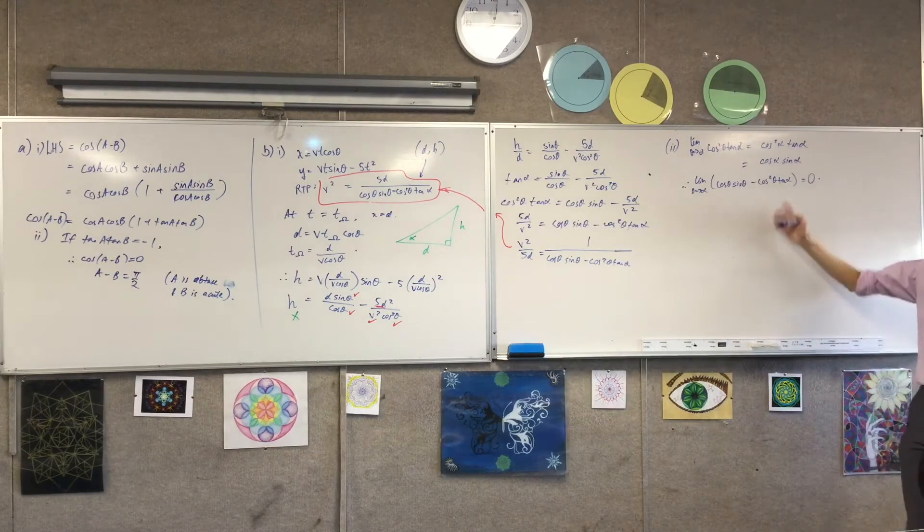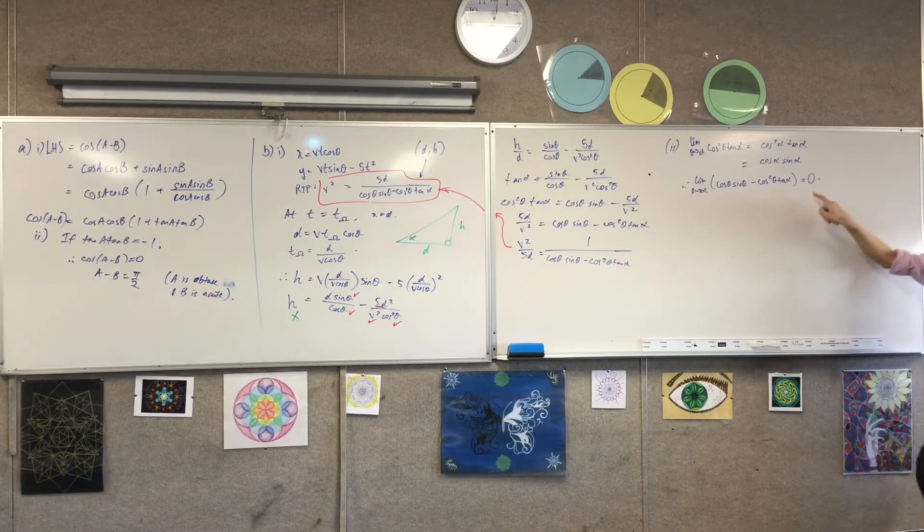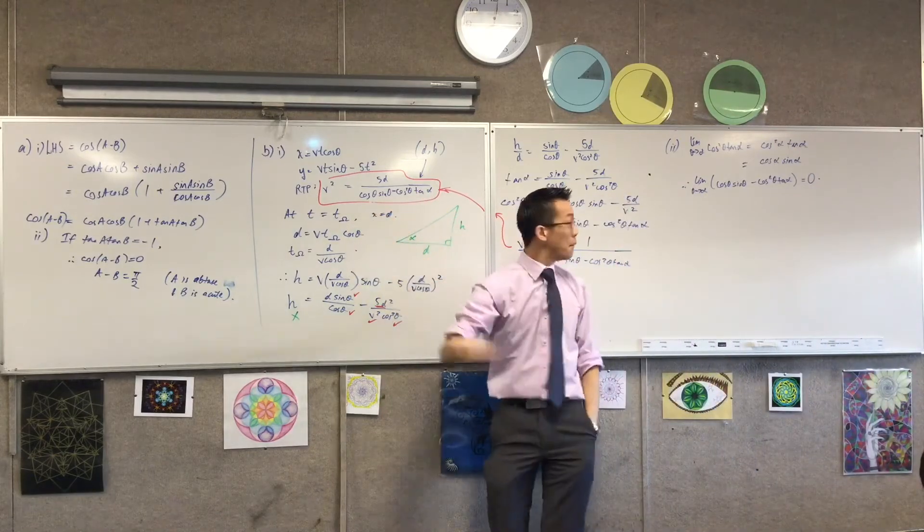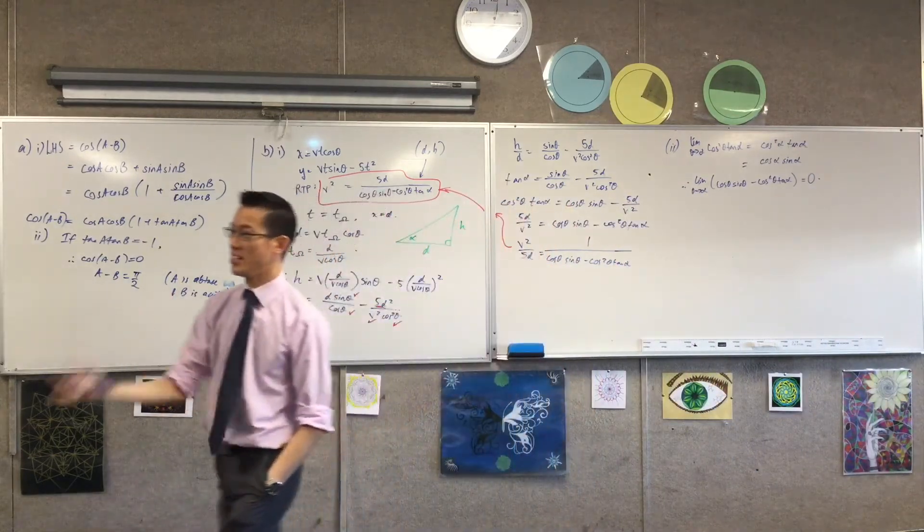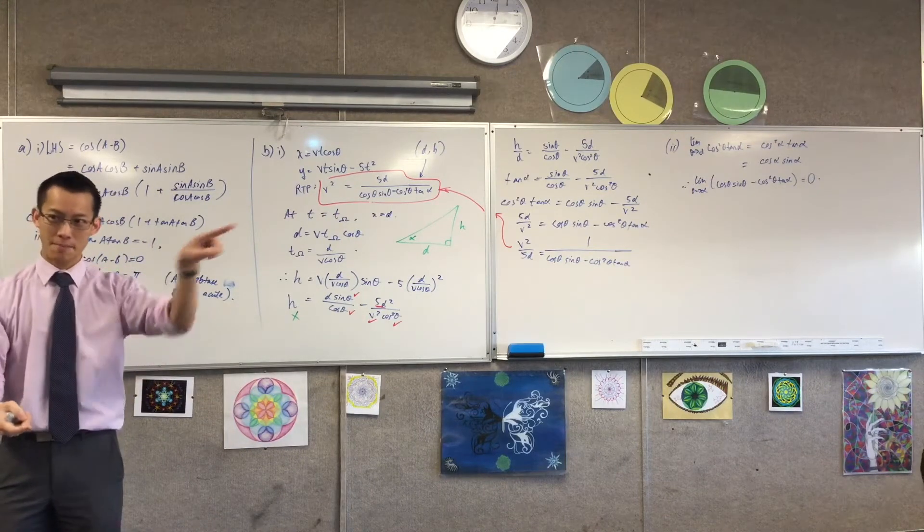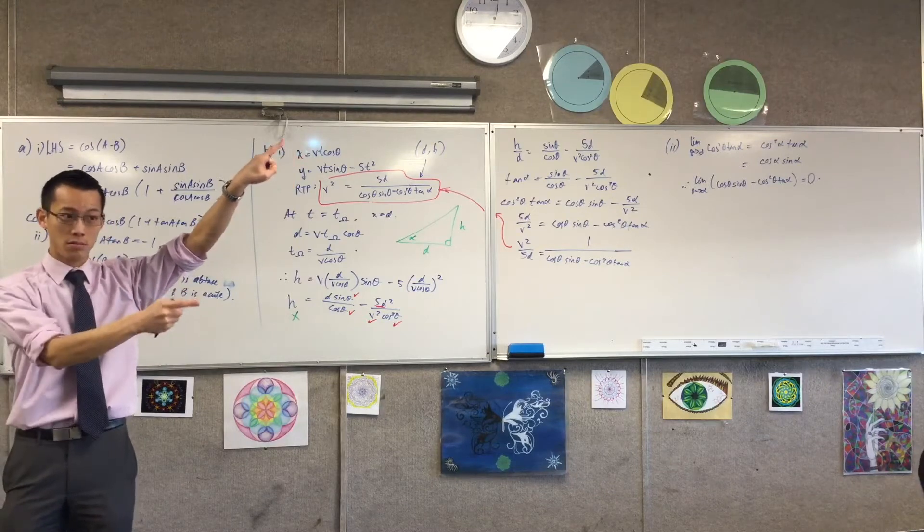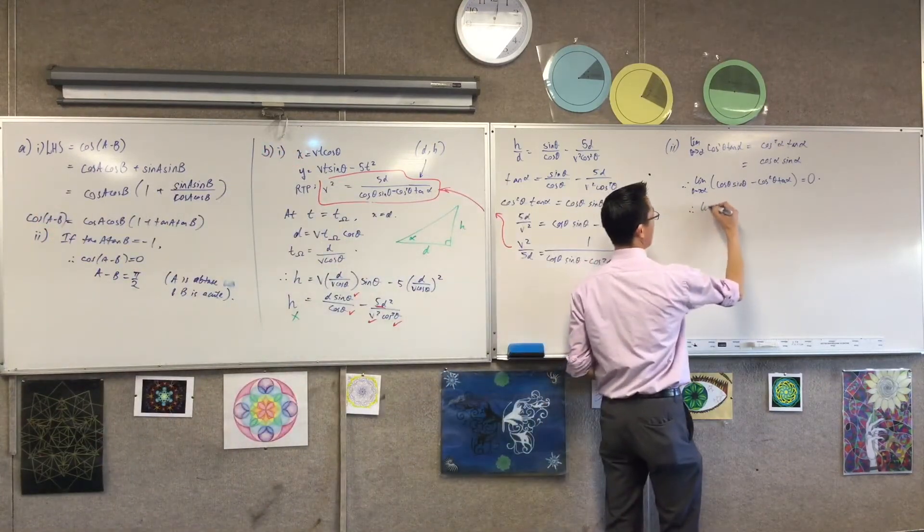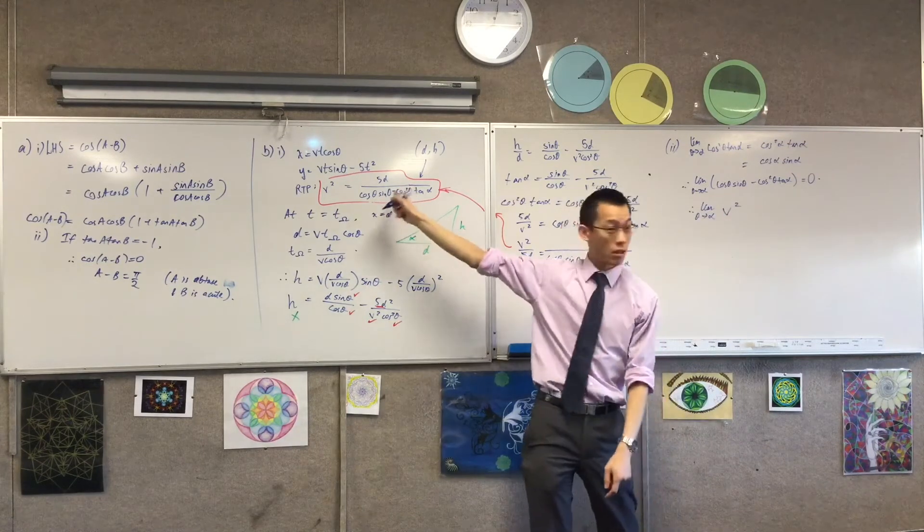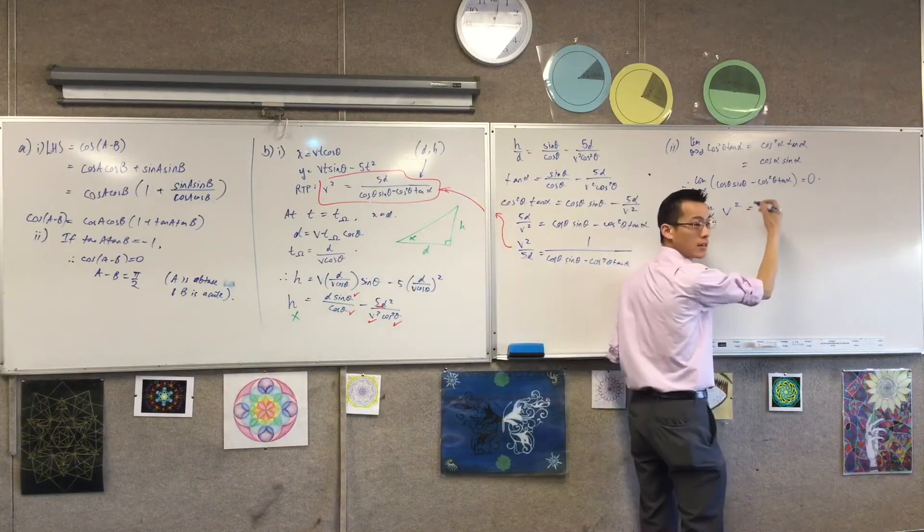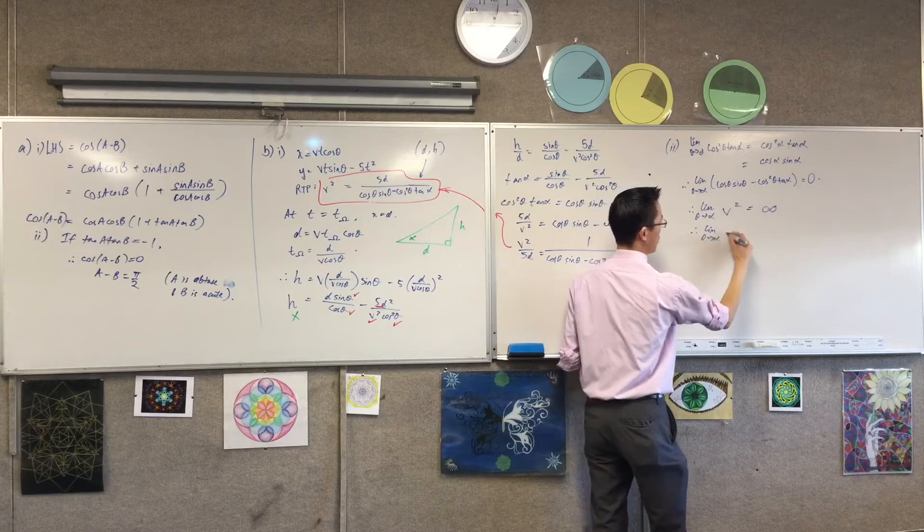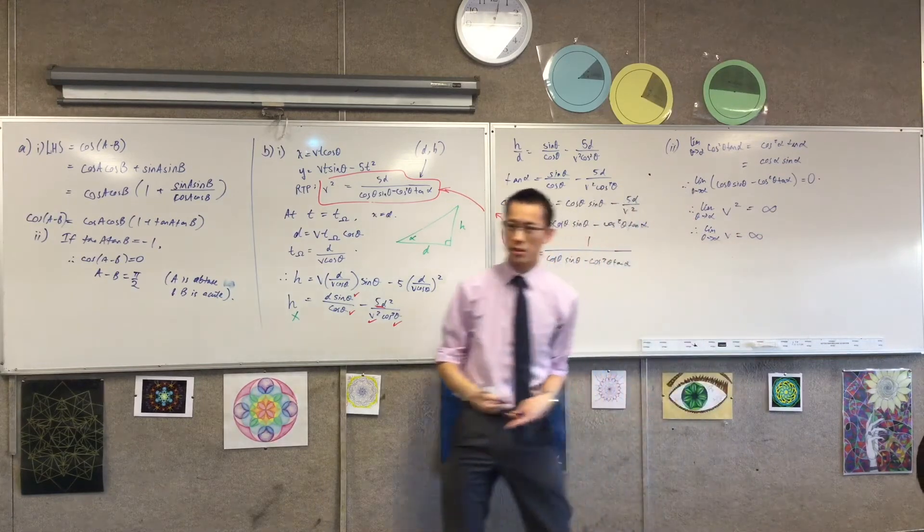Now, this is what's nice about having just dealt with the pieces. I can just say it's zero. Whereas I can't do that when I've got the whole thing, because you can't put zero on a denominator. But now that I know the denominator is going to zero, what does that tell you about the whole fraction? It's getting bigger, going bigger and bigger, tending towards infinity. So therefore, the limit as theta approaches alpha of v squared is going to be infinity. And so therefore, v, which is the bit I'm interested in, also tends to infinity.